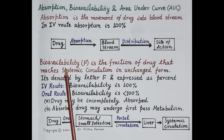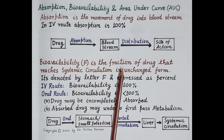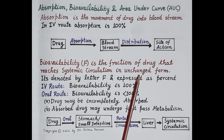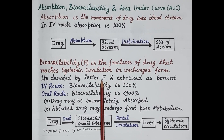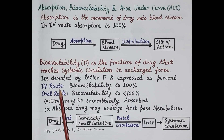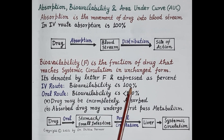Now let's move on to the concept of bioavailability. Absorption of a drug determines its bioavailability. As we know, absorption is the movement of drug into the bloodstream. Bioavailability is the fraction of drug that reaches systemic circulation in unchanged form. Bioavailability is denoted by the letter F and is expressed as a percent. When a drug is given by the intravenous route, 100 percent of drug reaches systemic circulation in unchanged form, so bioavailability is 100 percent.